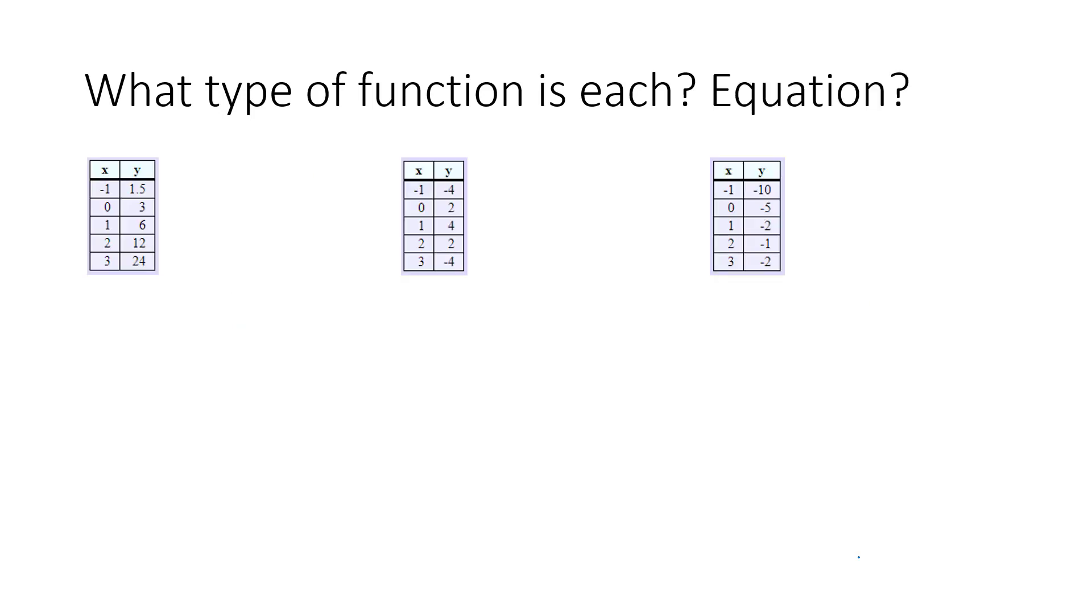Here we've got three functions represented in tables. Let's see if we can look for clues in these tables for how we get from one point to the next in order to determine what type of function it is. And maybe we can find the equation. This first example has got a decimal in the first point. That might be tricky to get to. So how do we go from three to six?